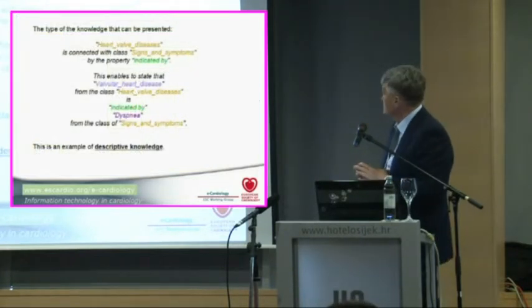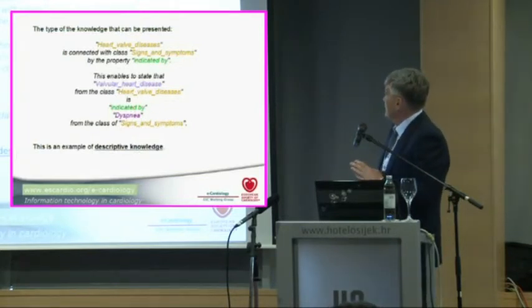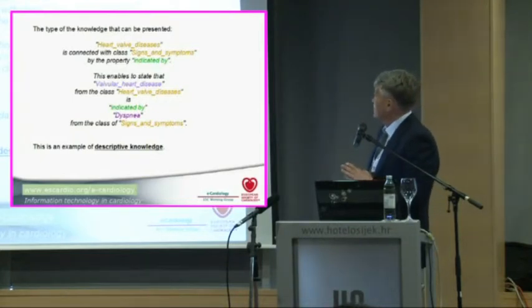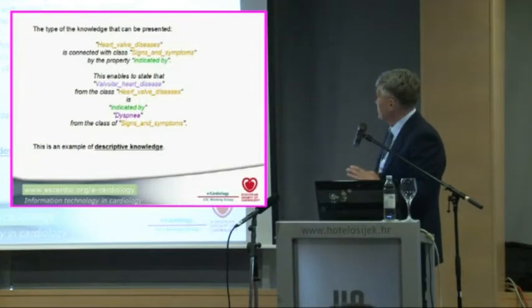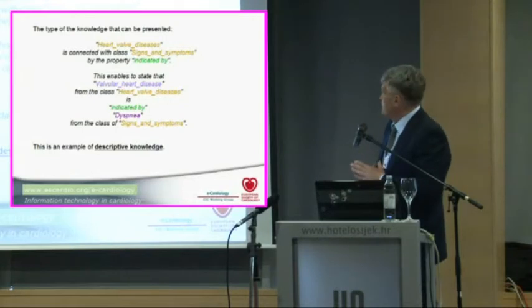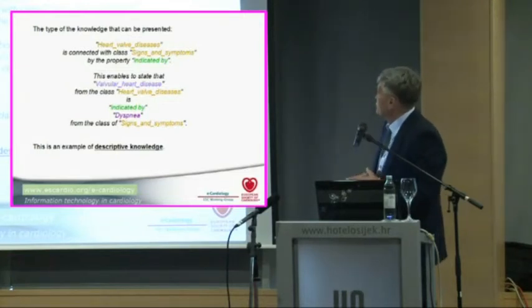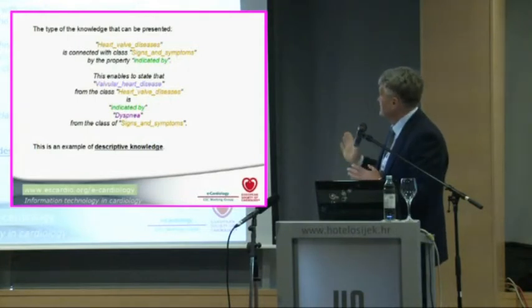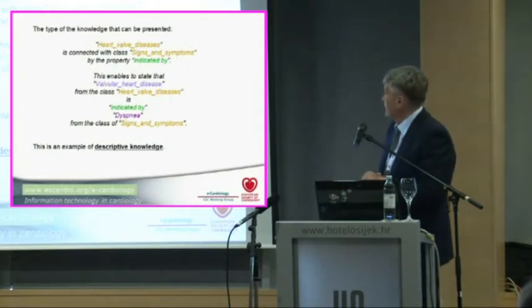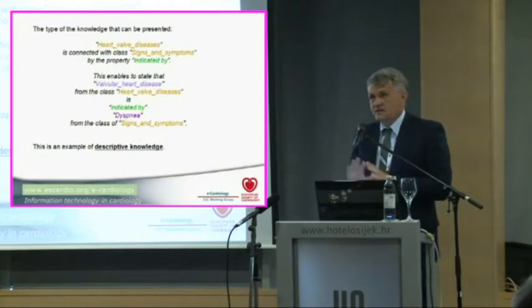Just for illustration, the type of knowledge that can be presented: heart valve disease is a class. It is connected with another class — signs and symptoms — by the property 'indicated by.' This structure enables us to state that valvular heart disease, which is an instance from the class heart valve diseases, is indicated by this finding, which is an instance from the class signs and symptoms.